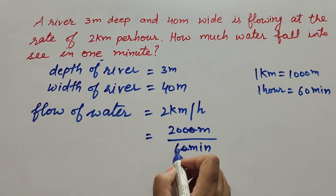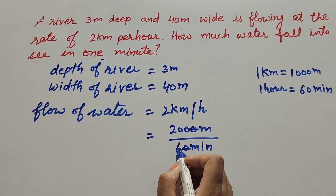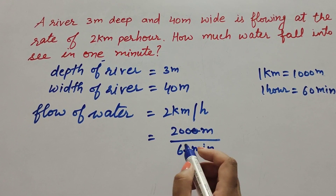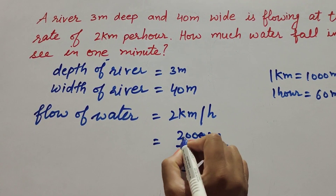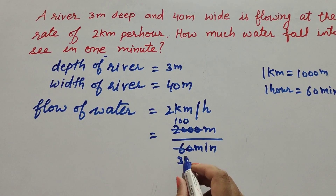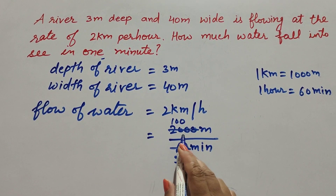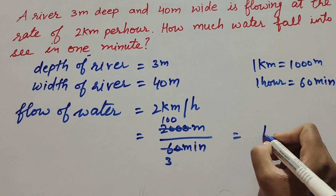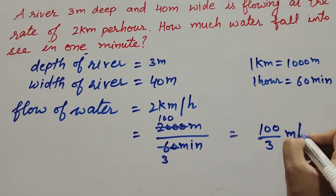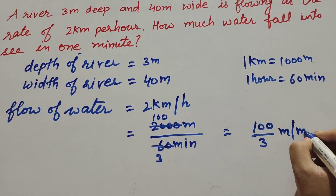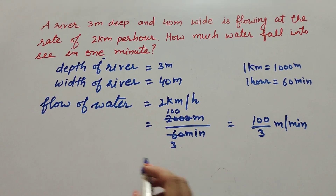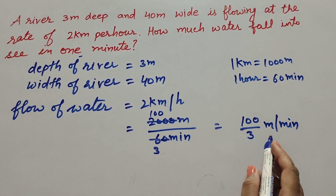Simplifying 2000/60: both numerator and denominator are divisible by 20, so cancelling gives 100/3. Therefore the flow of water in the river is equal to 100/3 meter per minute.